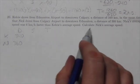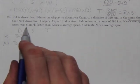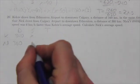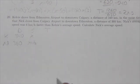What have we got here? It says that Nick's average speed was six kilometers an hour faster than Kelsey's. Okay, so if Kelsey is X, Nick is X plus six.